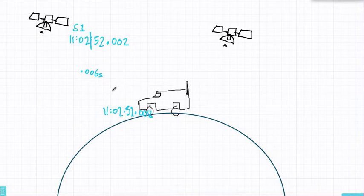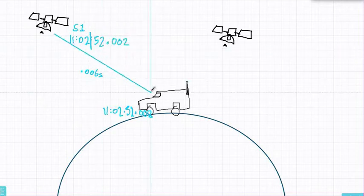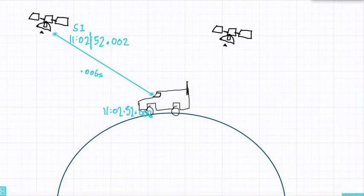That difference isn't just an error in the GPS receiver. The signal actually takes 0.006 seconds to come from satellite S1 at the speed of light, or GPS signals or any other radio wave, which is 299,792 kilometers per second. That means in 0.006 seconds that signal traveled 2,000 kilometers. We don't know where the van is but we know it's 2,000 kilometers from satellite S1. And we know where satellite S1 is.